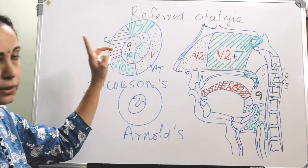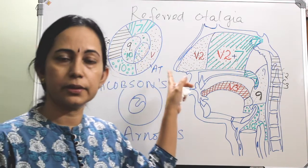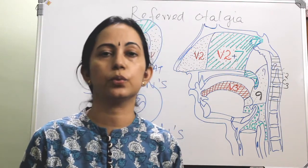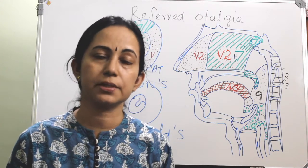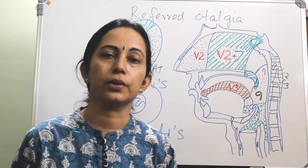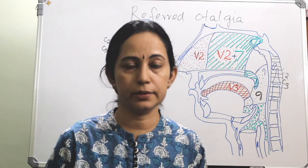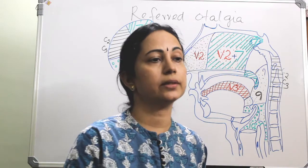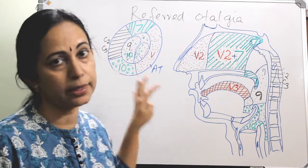So the sensory innervation of the ear is mainly by: the fifth nerve — trigeminal — through the auriculotemporal; the ninth nerve through Jacobson's nerve; the tenth nerve through Arnold's nerve; C2 and C3 through the greater auricular and lesser occipital nerves; and a small part for pain, touch, and temperature sensation by the posterior auricular branch of the seventh nerve. Now, what are the sensory projections of each cranial nerve leading to referred otalgia?